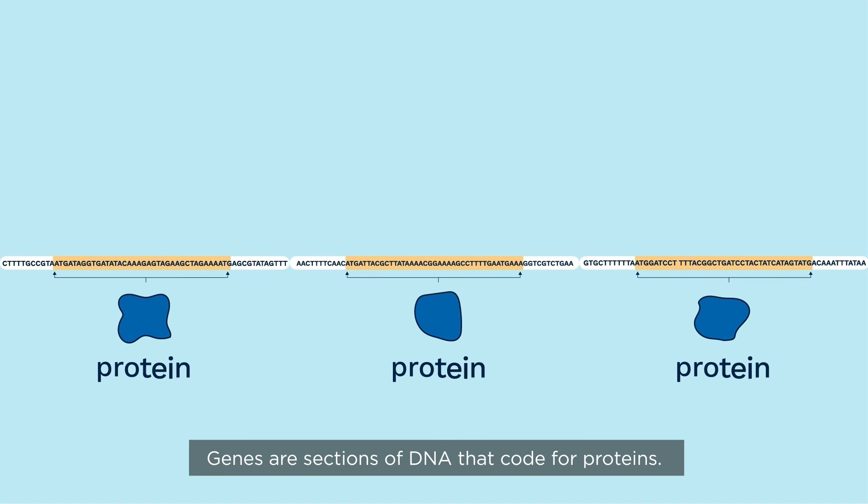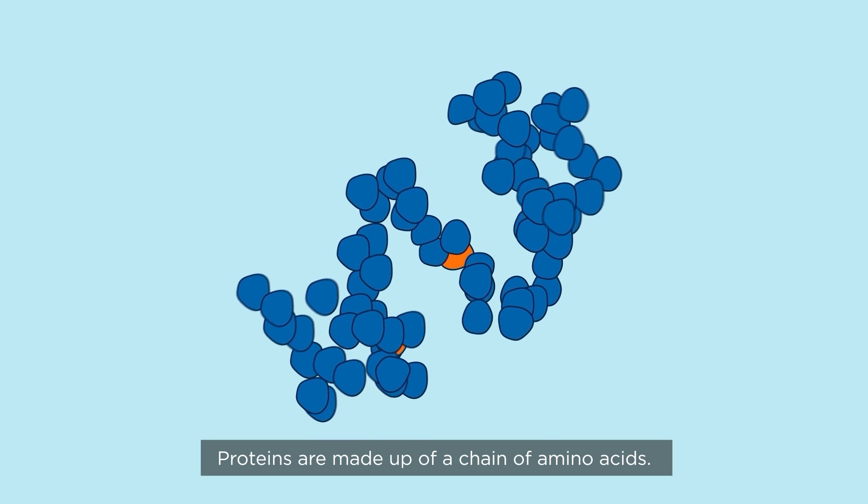Genes are sections of DNA that code for proteins. Proteins are made up of a chain of amino acids.